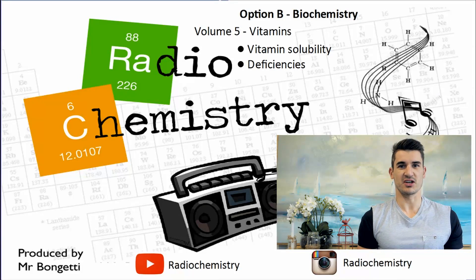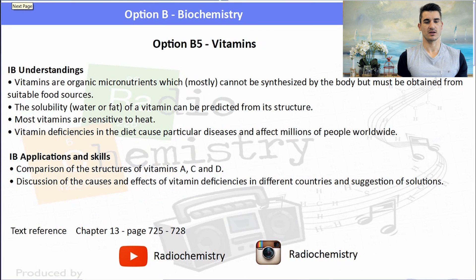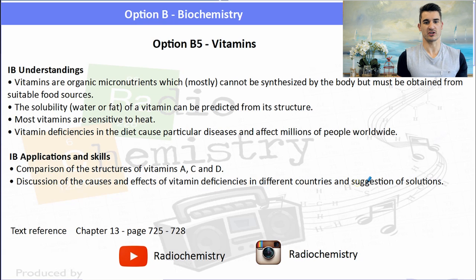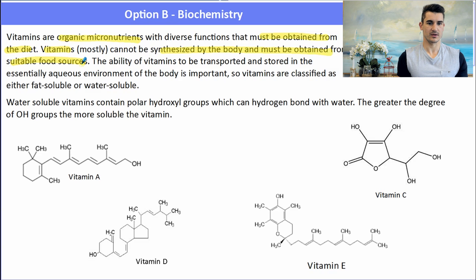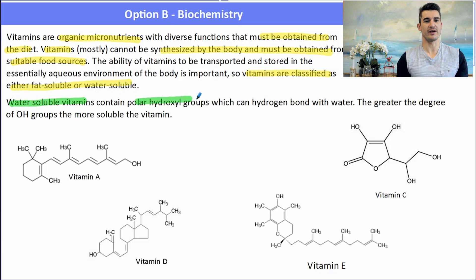We look at vitamin solubility and the IB understandings, applications and skills focus around vitamins and what they are. They basically focus around the fact that some are soluble and some are insoluble. We also need to compare the structures of vitamins A, C and D, which are in the data book. Vitamins are organic micronutrients with diverse functions that must be obtained from the diet — mostly they cannot be synthesised by the body, so we have to get them from food. They can be stored either in the aqueous environment or in the fat environment, so vitamins are either water-soluble or fat-soluble.